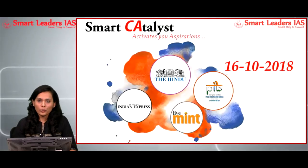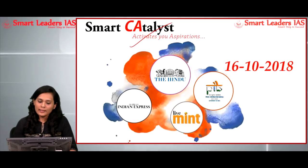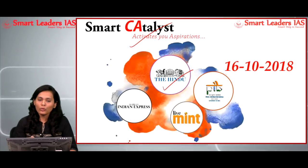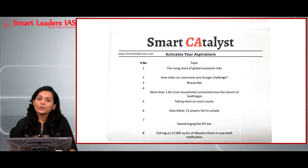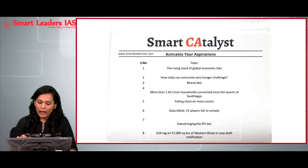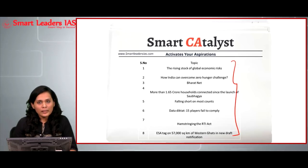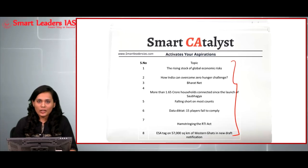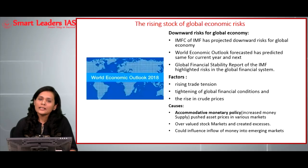Hello friends, welcome to our new initiative Smart Catalyst. Today we'll be analyzing news articles from The Hindu, The Indian Express, LiveMint, and PIB for the day 16th October 2018. The news articles we'll be covering today are eight, and apart from these eight articles, a few other news items will be covered in the form of MCQs for the prelims. The PDF is attached in the description below; kindly download it for your reference.